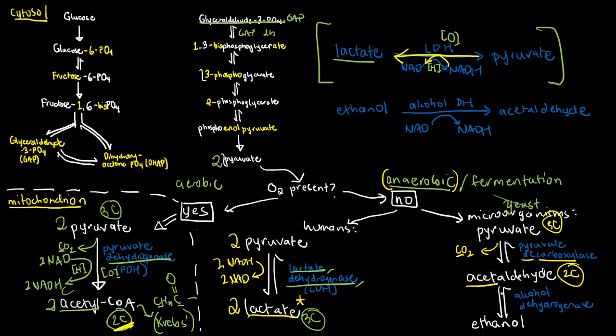Acetaldehyde can be further converted to ethanol using the enzyme alcohol dehydrogenase. Et- is a prefix that means two carbons. So here the carbon count is conserved.